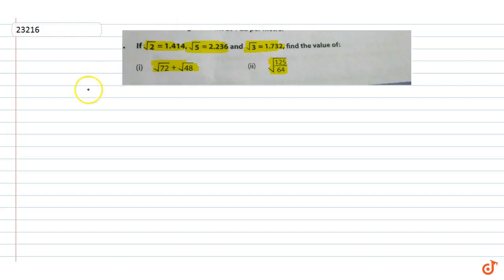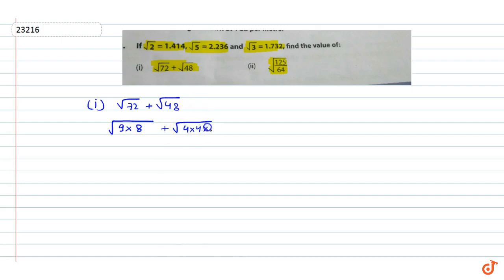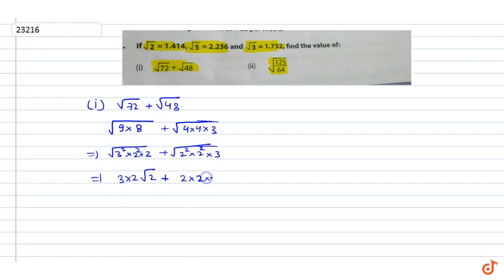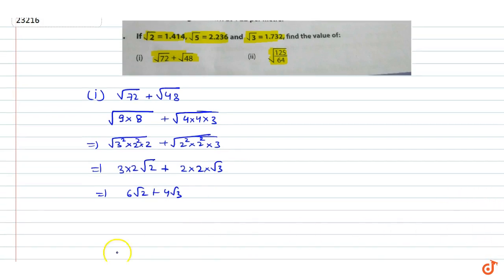First, let's solve the first question: root 72 plus root 48. We can write root 72 as root of 9 into 8, which is root of 4 into 4 into 3. Simplifying: root of 3 squared into 2 squared into 2, plus 2 squared into 2 squared into 3. This gives us 3 root 2 multiplied by 2 root 3, simplifying further using the factor pairs.